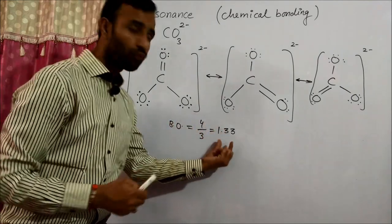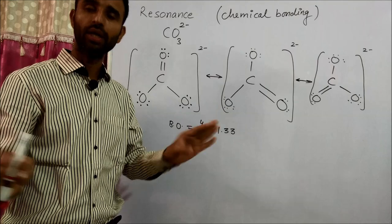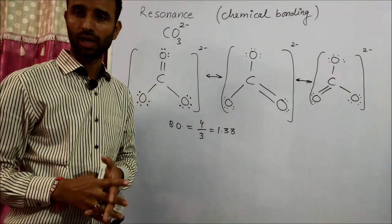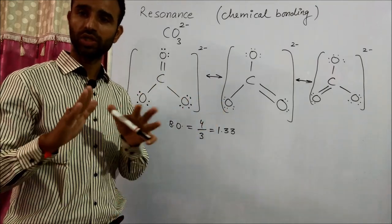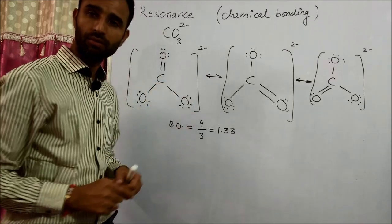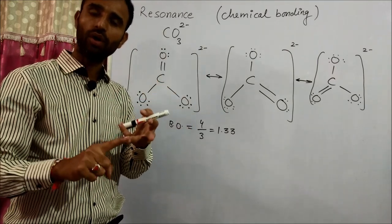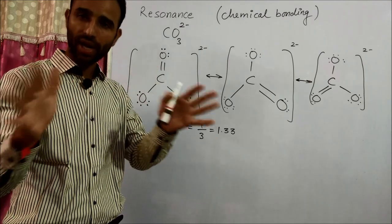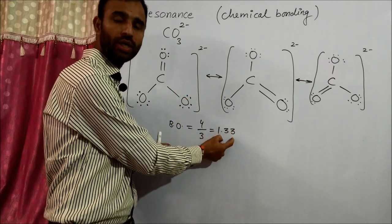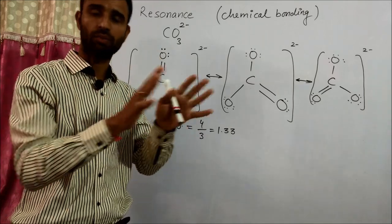A fractional bond order cannot be explained by any single Lewis structure. According to Lewis structure, between two atoms there is either a single bond, double bond, or triple bond. So wherever there is a fractional bond order, that means resonance takes place.